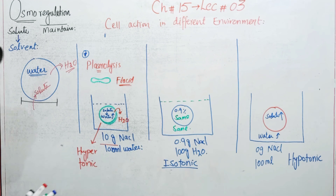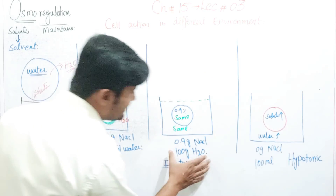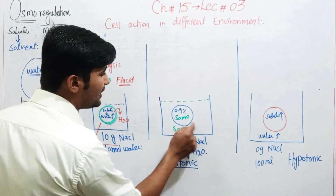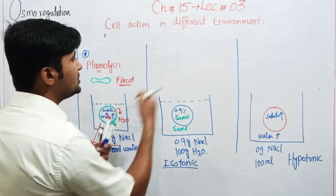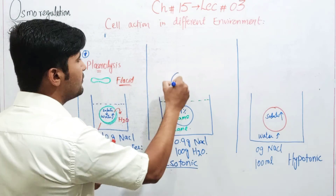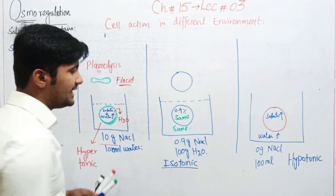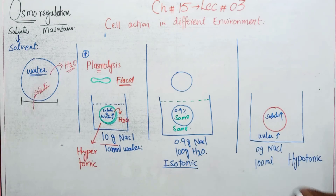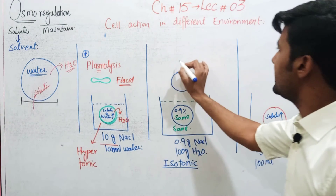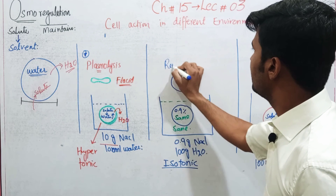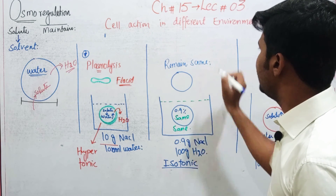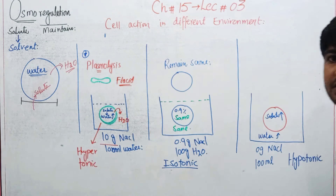Isotonic case میں کوئی net change نہیں ہوگا، کیونکہ water کی concentration باہر اور اندر same ہے۔ تو cell کی جو shape ہے وہ جتنی پہلے تھی اتنی ہی رہے گی - cell remain same، no net change۔